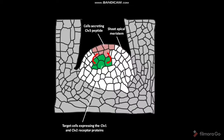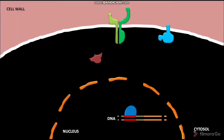Let us take a closer look at the hypothetical signaling pathway through which Clv3 peptide stimulates the differentiation of a target cell. The plasma membrane of a target cell has transmembrane receptor proteins like Clv1 and Clv2.